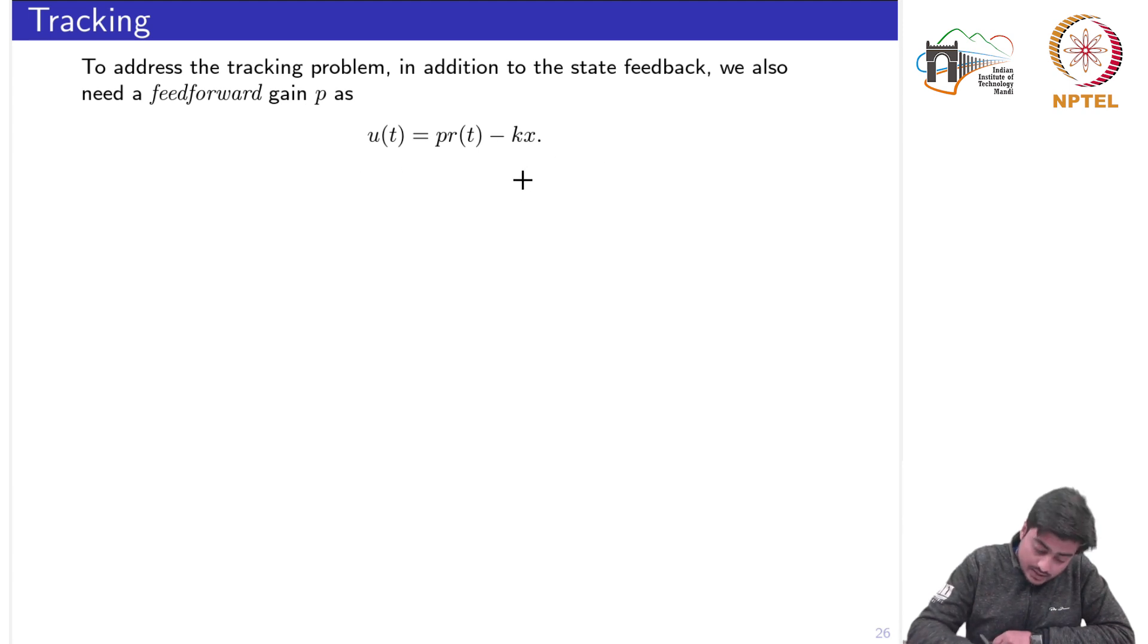If you see the structure of the state feedback system, this is the state space system where we have two outputs, let's say y, and suppose we also have the measurement of the state and this is u.